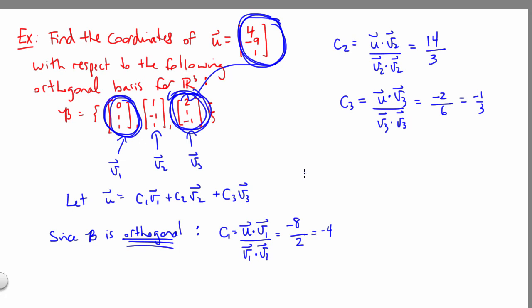So we've now found the coordinates of u with respect to our basis. We could say u equals negative 4 times our first basis vector, plus 14 thirds times our second basis vector, minus 1 third of our third basis vector.